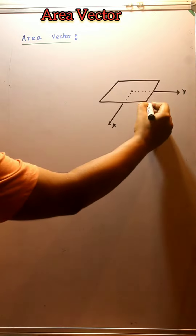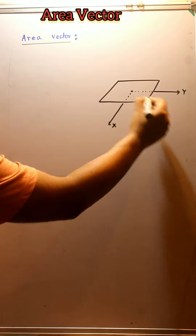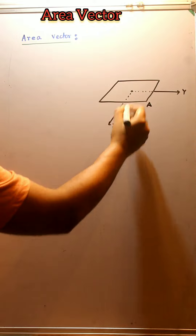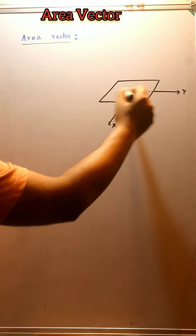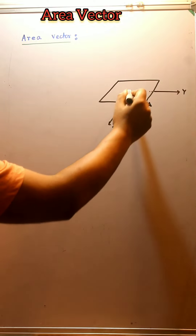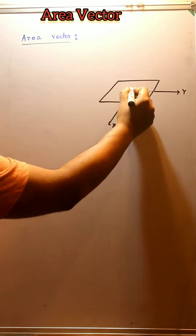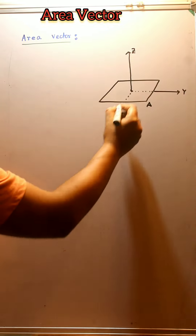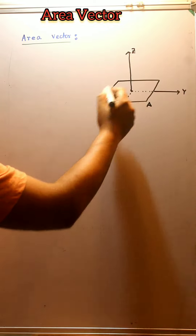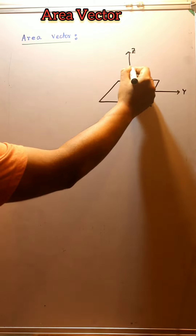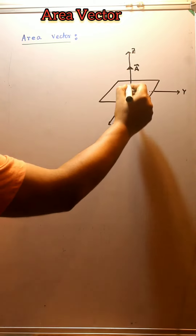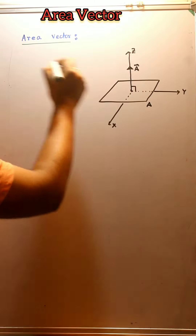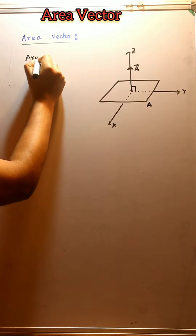Let an area A be placed in the xy plane. This area exists in a two-dimensional plane. We consider the z-axis, which is perpendicular to the plane. In this case, the area vector acts at right angles to the plane of the area.